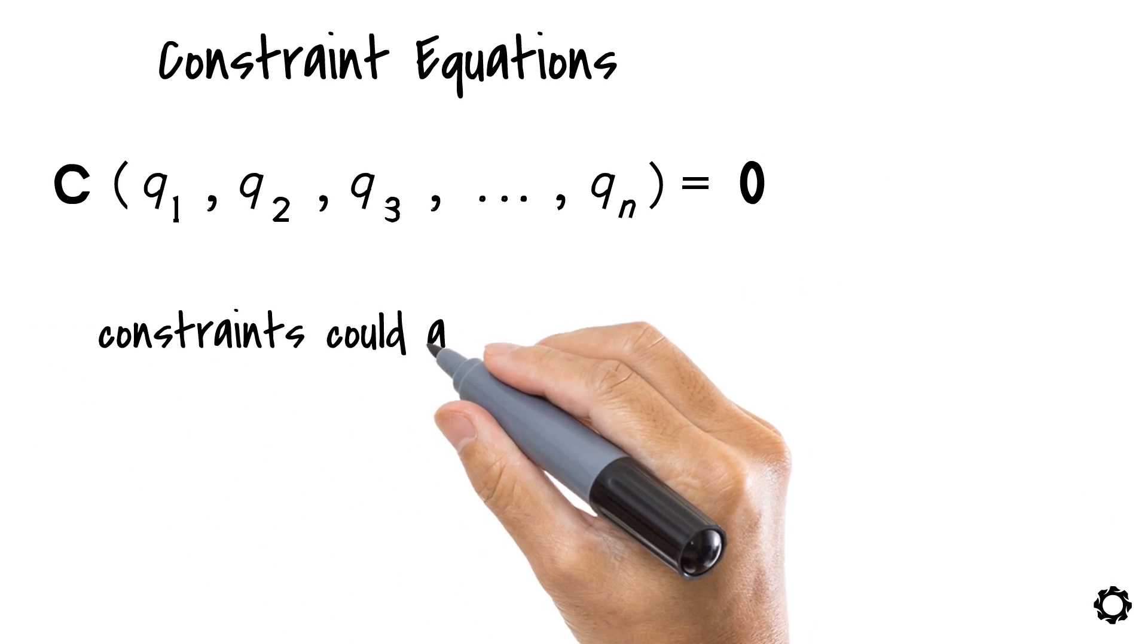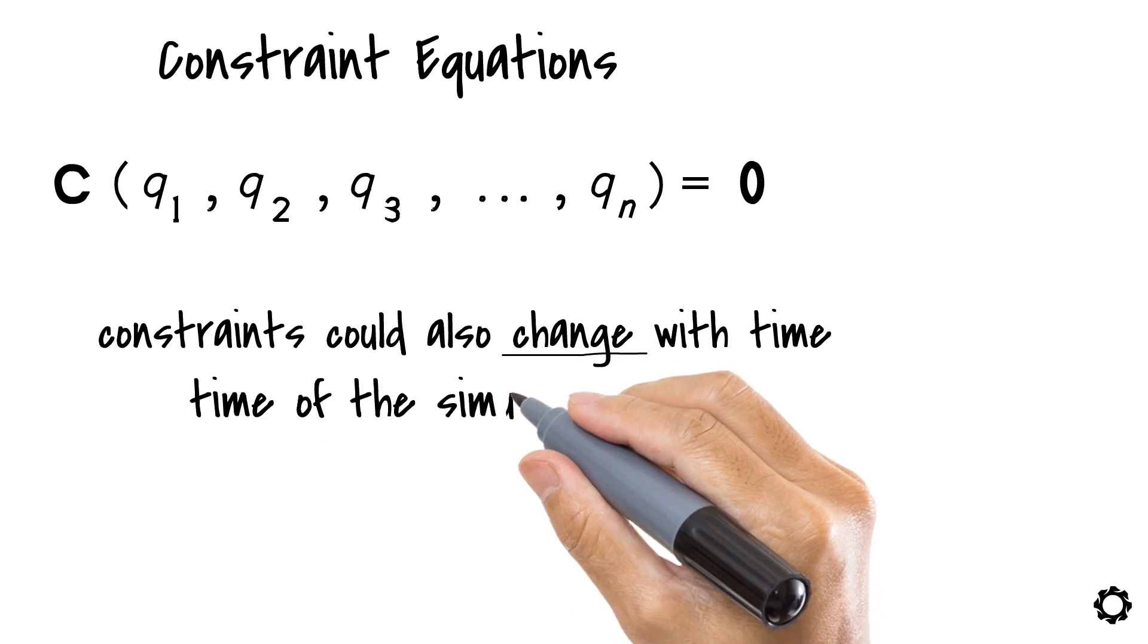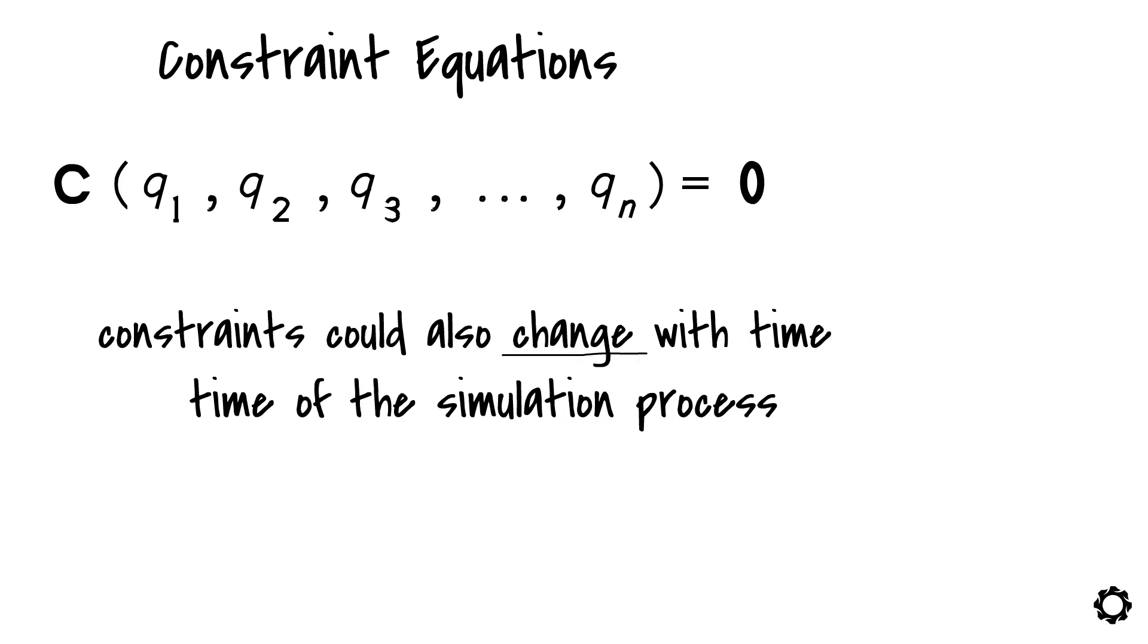Constraints could also change with time, meaning that certain conditions change depending on the time of the simulation process, or simply just that they change with time. In this case, we will add the time dependency to our previous equations as follows: C of q1, q2, q3 until qn and time equals zero.